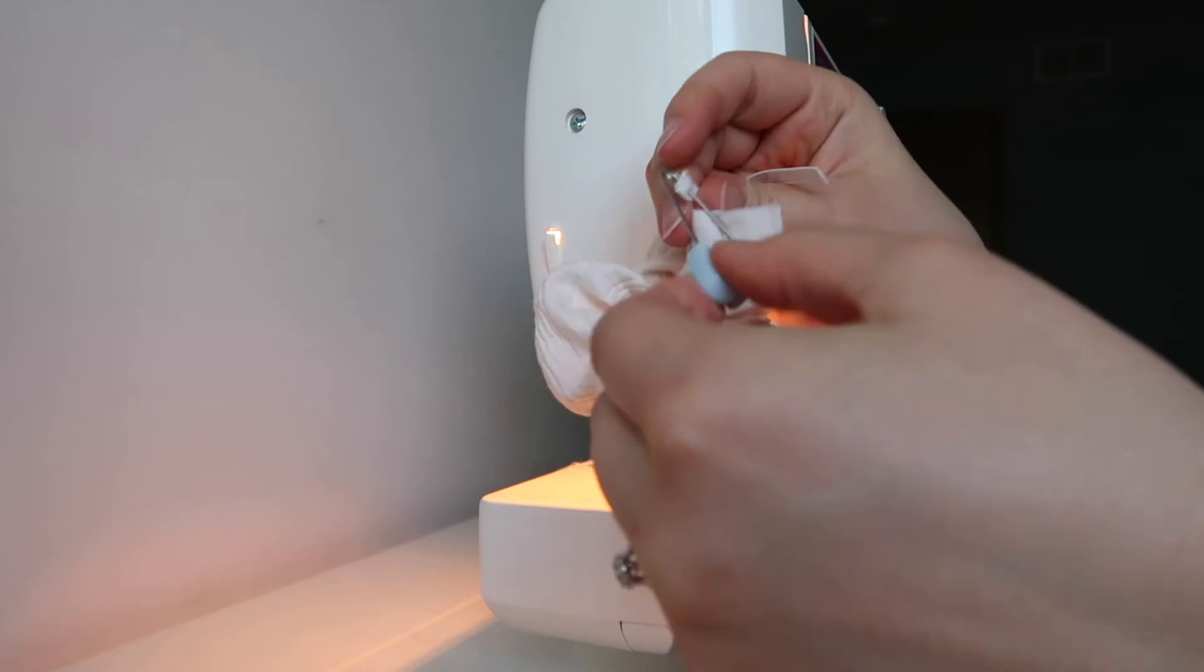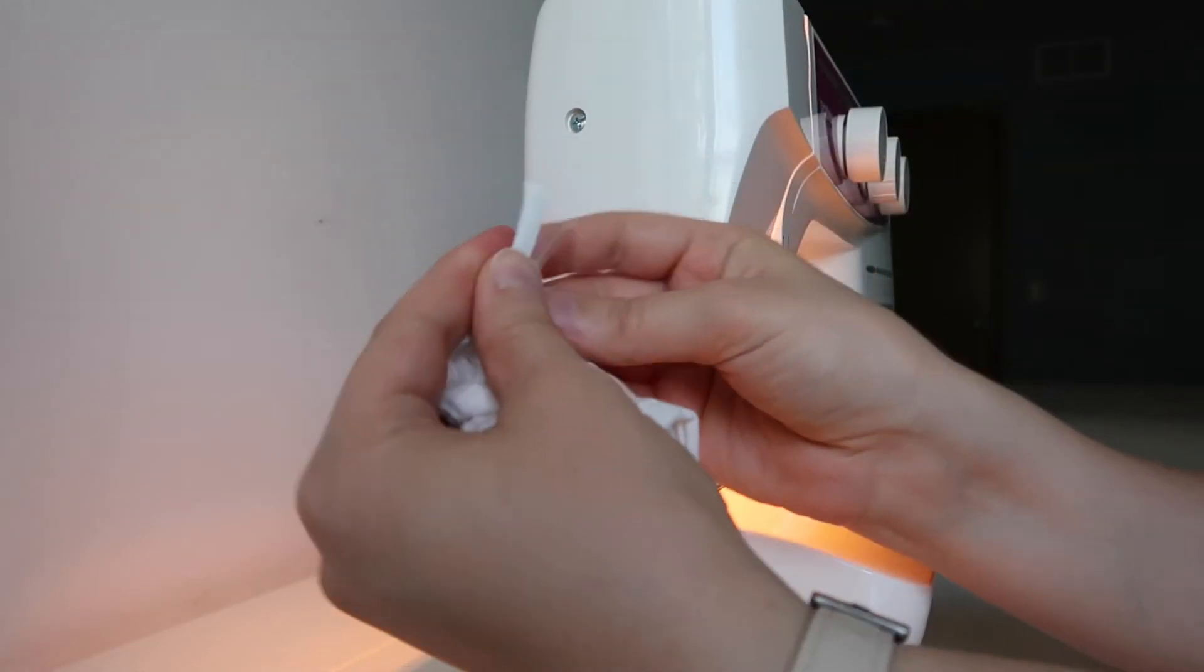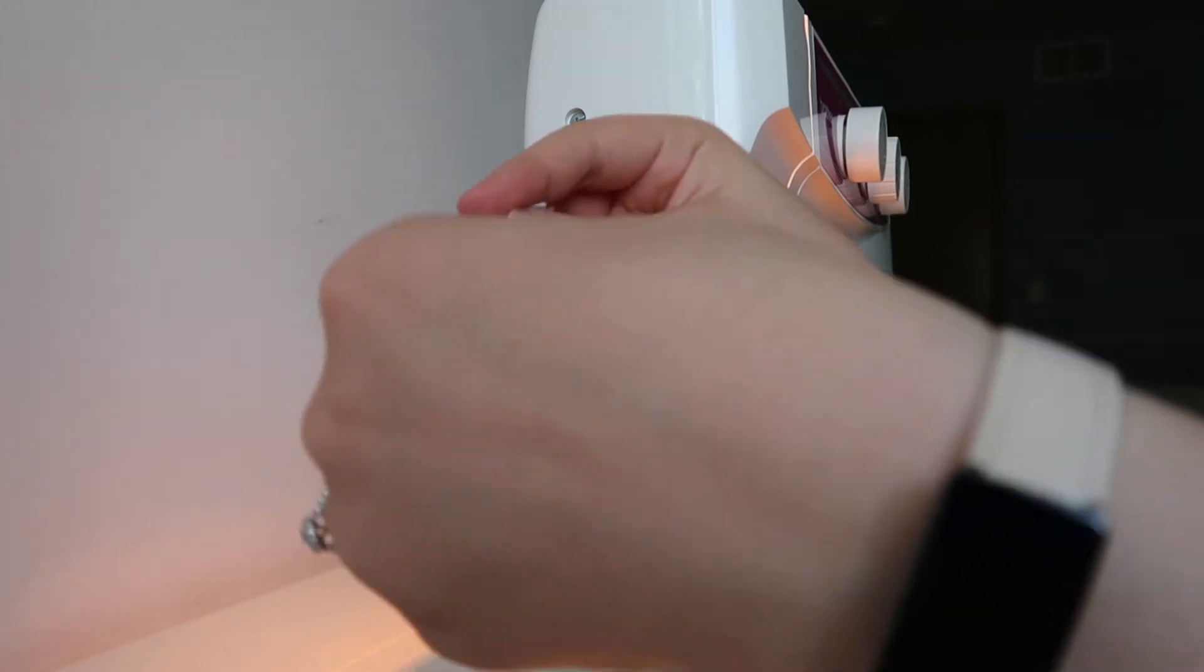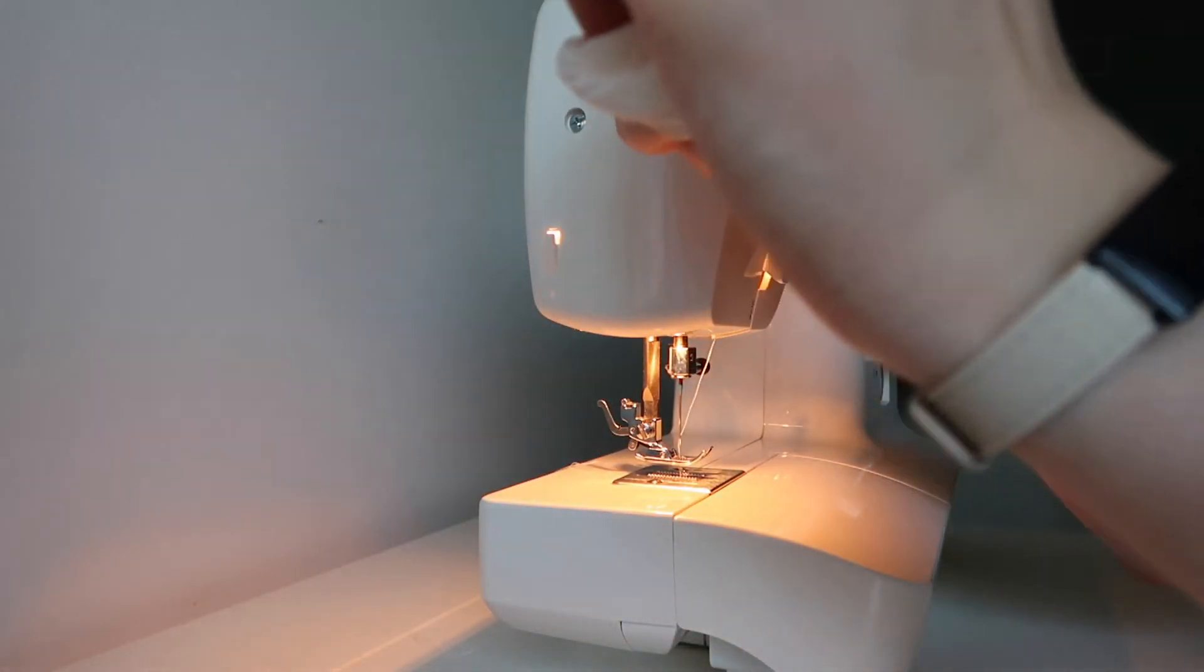Once your elastic is through both ends, you can take the safety pin off and tie the two ends into a knot. I chose to use up about an inch of the elastic here to make it a little bit of a snugger fit.